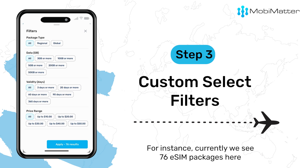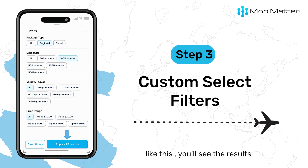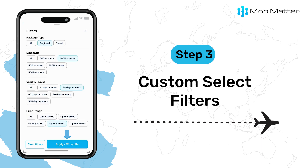For instance, currently we see 76 eSIM packages here. But upon custom-selecting the filters, you'll see the results instantly update based on your selected criteria.